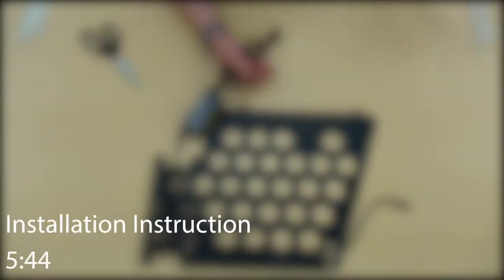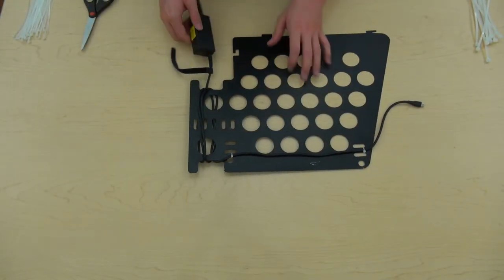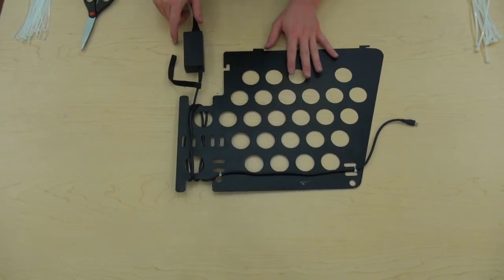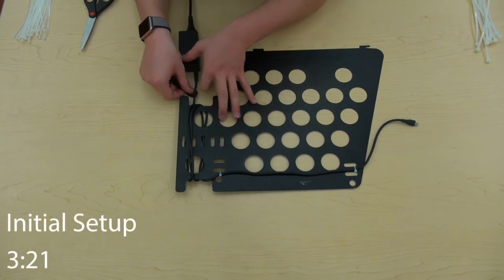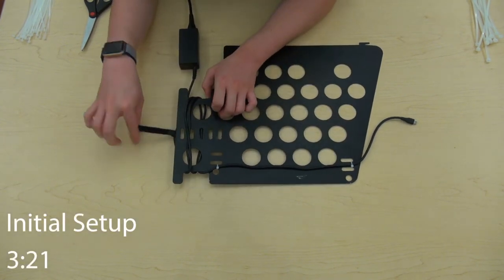Continue watching for instructions on preparing the bottom dividers, or skip to the time on the screen for installation instructions. Bottom dividers. Now for the bottom dividers, start this section from where you left off at the minute on the screen.